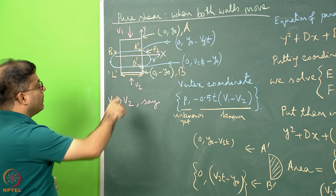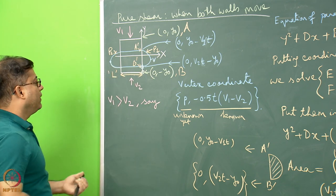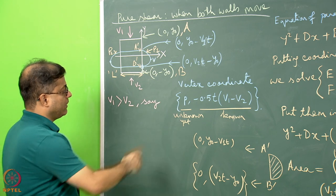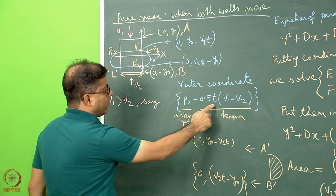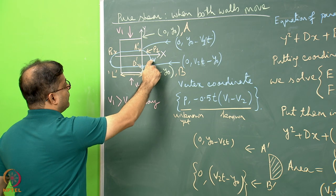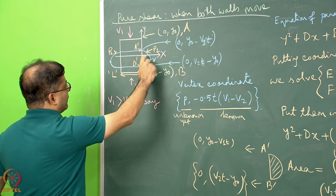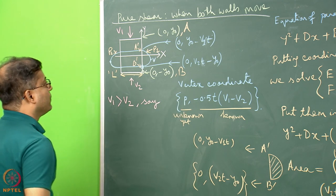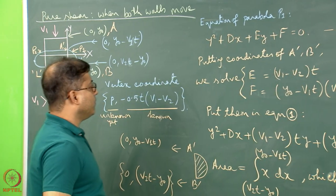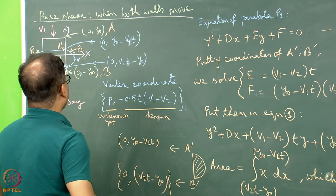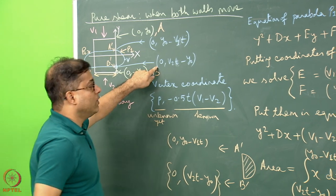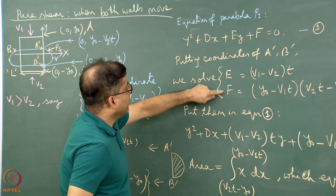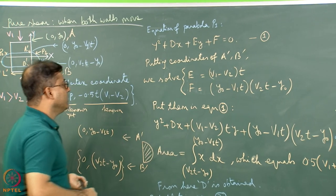If I think of a vertex of this parabola — call parabola p₁ and the other p₂ — we focus only on p₁. This parabola has a vertex V with coordinate (p, −0.5t(v₁ − v₂)), where p is unknown. The y-ordinate of the vertex is equidistant from the y-ordinates of A' and B'. Now the parabola p₁ has a quadratic equation y² + dx + ey + f = 0. Putting in the coordinates of A' and B', since these points lie on the parabola, we can solve for E and f. Then substituting back gives the full form of the quadratic equation.